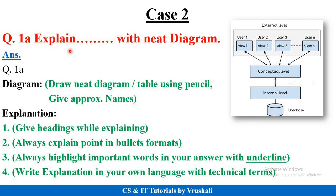Suppose your question is 'explain with neat diagram.' First, the diagram is necessary — diagrams carry the most marks in this question. Draw the diagram accordingly, give proper labels and proper names to all components, and also give the diagram name. Then write the explanation in bullets format, highlight words, and write in your own language. You need to find out how many marks are there — for a 5-mark question write theory accordingly, for an 8 to 9 mark question write more detailed theory.